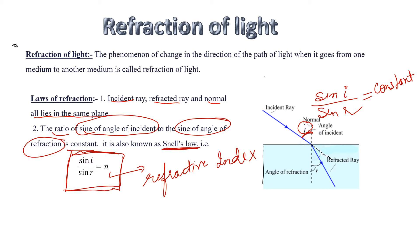sin i over sin r equals n, where n is the refractive index. This constant is known as the relative refractive index and this equation is called Snell's law.